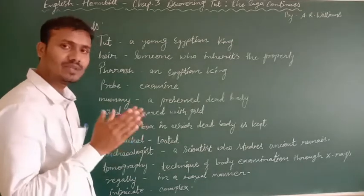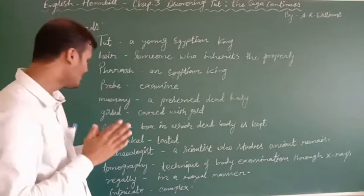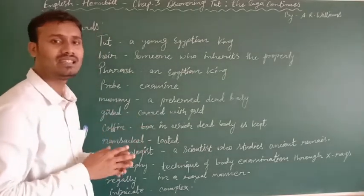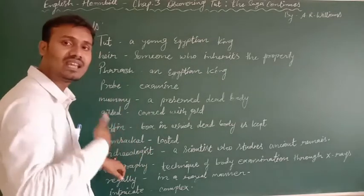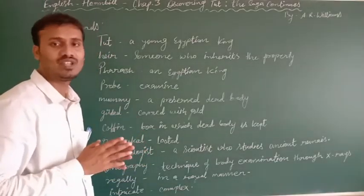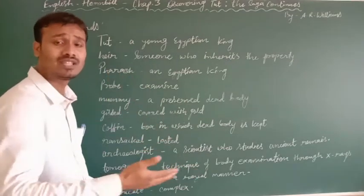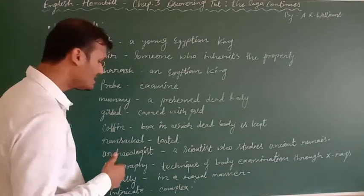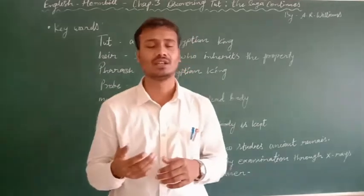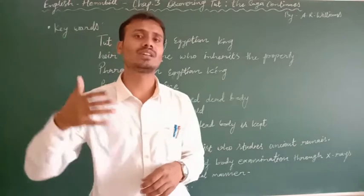Gilded — if something is covered with gold, that is known as gilded. Coffin — a coffin is a box in which a dead body is kept. Ransacked means looted. Archaeologist — a scientist who studies ancient remains; a person who studies ancient remains is known as an archaeologist. Tomography — a technique of body examination through X-rays. Regally — if something is done in a royal manner, that is regally. Intricate — intricate means complex. For more words, you can go through the chapter and read it.